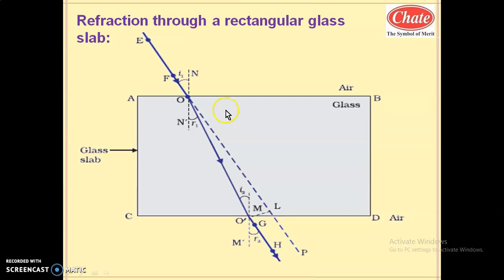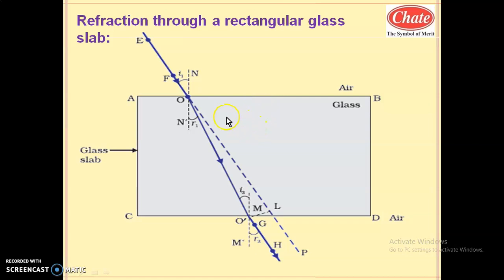Let us start the next part about refraction through a rectangular glass slab. As light travels from air medium to glass medium, in air the speed of light is more. Glass is a denser medium, so the speed of light decreases. As the speed decreases, light has some obstacle while traveling in the denser medium, so it bends toward the normal.